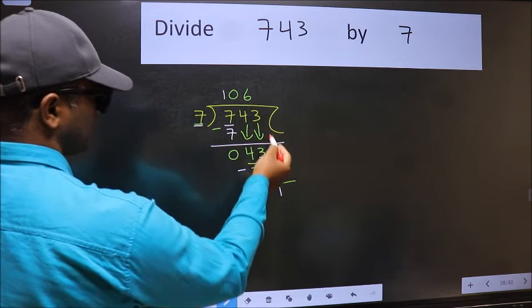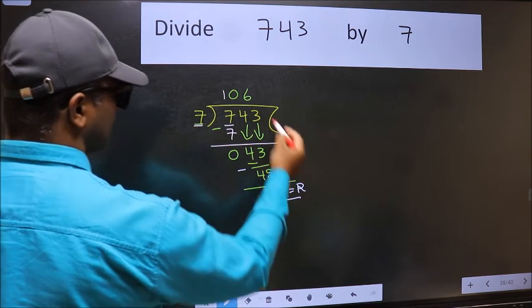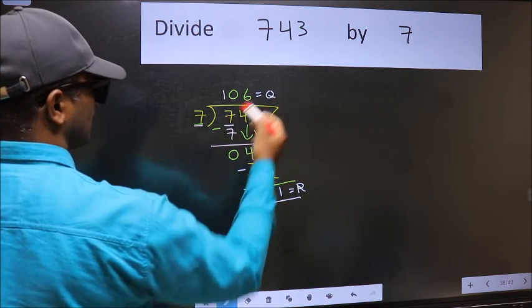No more numbers to bring it down, so we stop here. This is our remainder and this is our quotient.